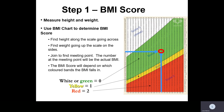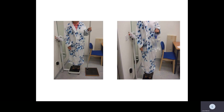The BMI score corresponds to coloured bands on the chart: white or green scores zero, yellow scores one, and red scores two. Looking at the image, the person on the left-hand side probably has a normal BMI, whereas the person on the right-hand side is thin and probably has a low BMI.